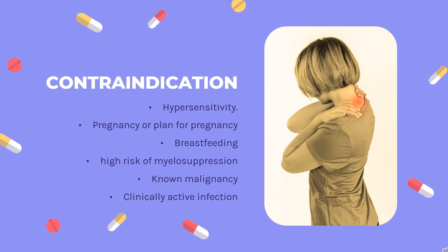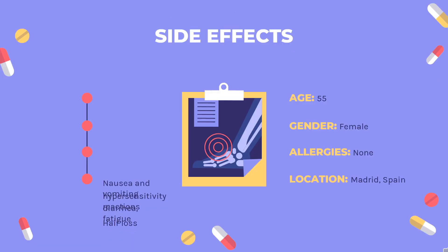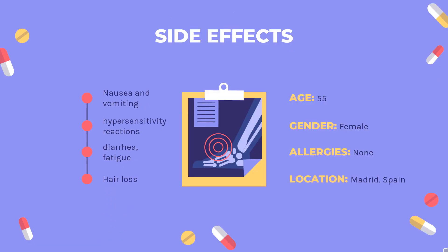Additional contraindications include high risk of myelosuppression, known malignancy, and clinically active infection. Side effects: Nausea and vomiting are common adverse effects, especially at the beginning of treatment. Such cases are managed by taking azathioprine after meals or transient intravenous administration.